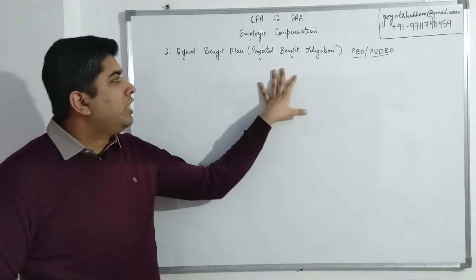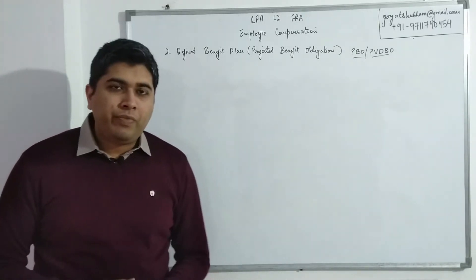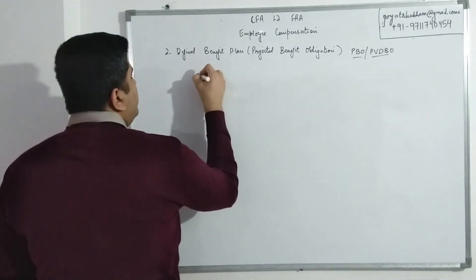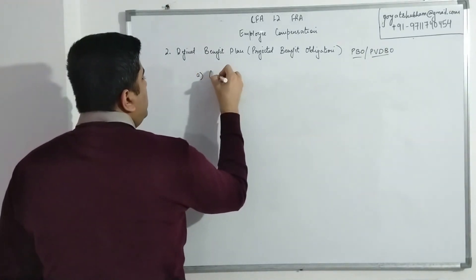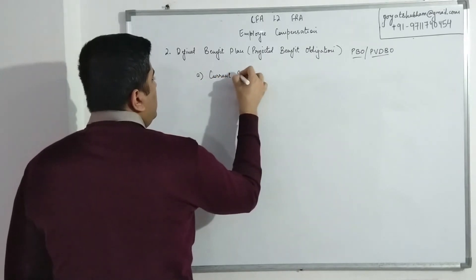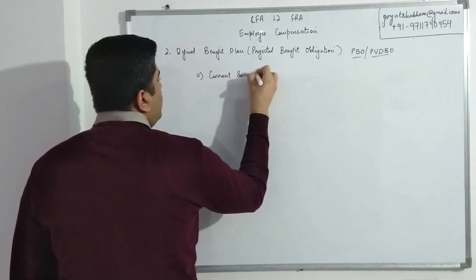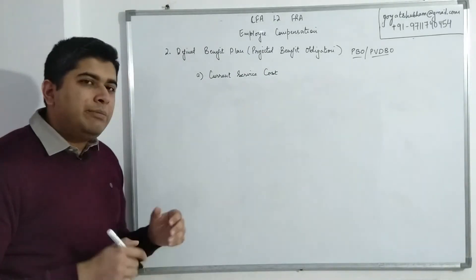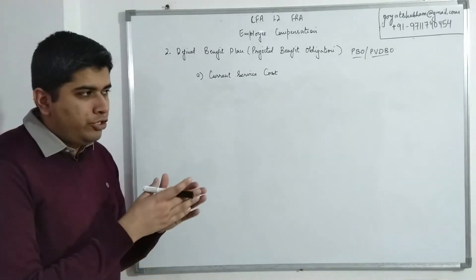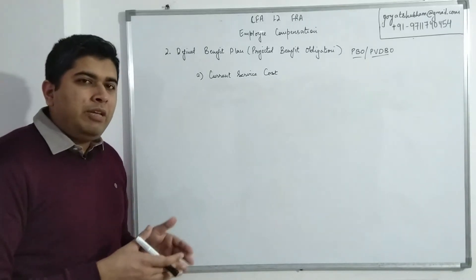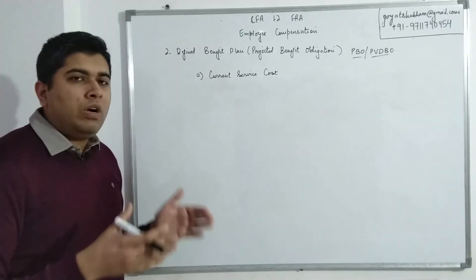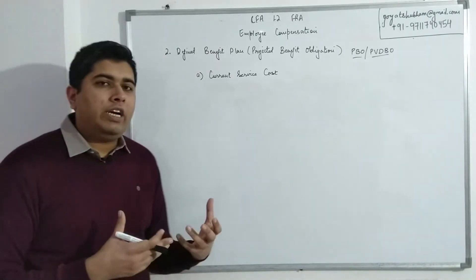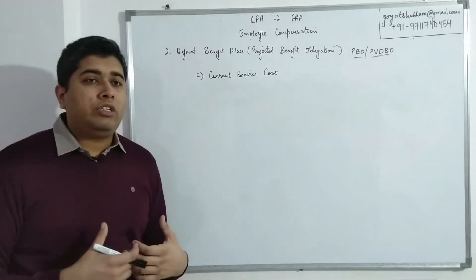And if after all of those adjustments I simply calculate the present value of all of those payments, that is how much obligation an employer has. So basically I am supposed to make some payments after retirement of the employee. What is the present value of those payments subject to certain terms and conditions? That is my Projected Benefit Obligation. Now, Projected Benefit Obligation has a few components. So first is the Current Service Cost.